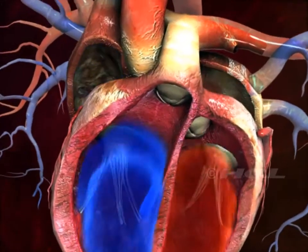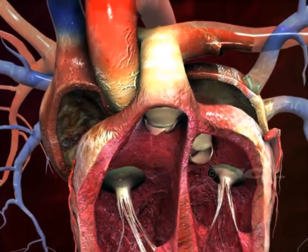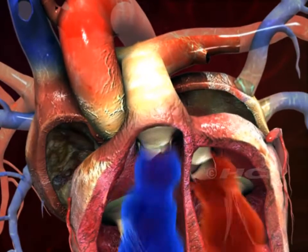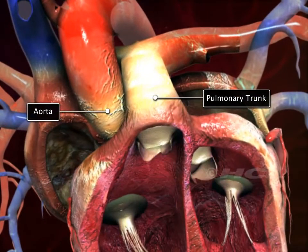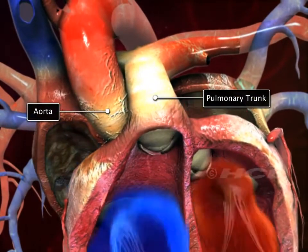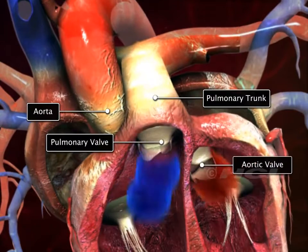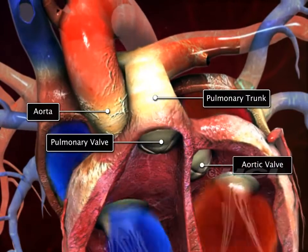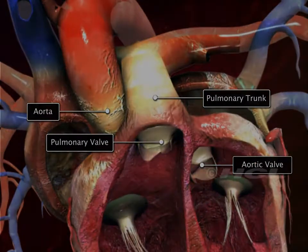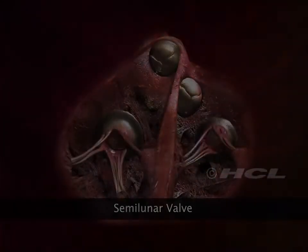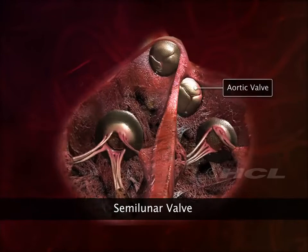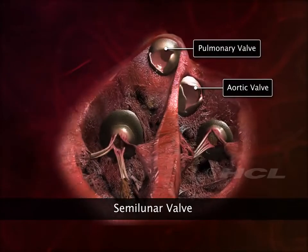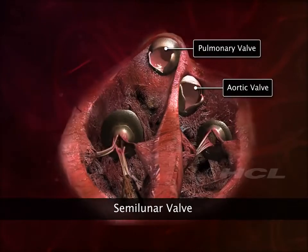There are also valves at the opening of the pulmonary trunk and the aorta. These are called the pulmonary valve and the aortic valve respectively. Because of their crescent moon shape, these two valves are also called semilunar valves.